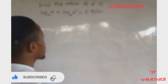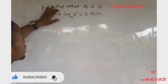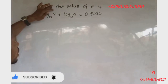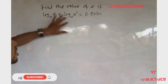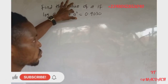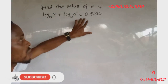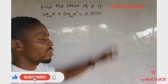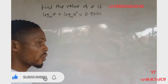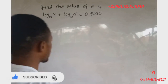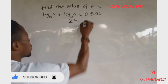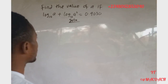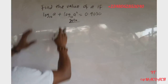This question says: find the value of 'a' if log base 10 of 'a' plus log base 10 of 'a squared' is equal to 0.9030. How we solve this question is very simple, so let's go.